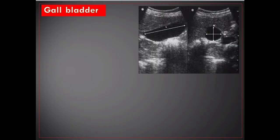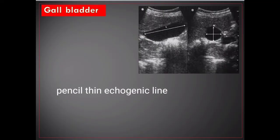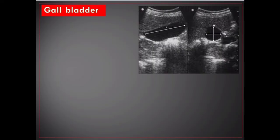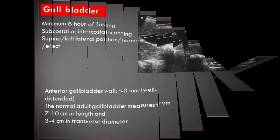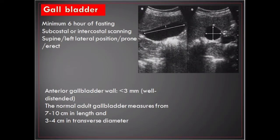Gallbladder sonography is used as the initial imaging technique for evaluating patients with suspected gallbladder disease because of its high sensitivity in the detection of gallbladder stones, its real-time character, speed, and portability. The normal gallbladder wall appears as a pencil-thin echogenic line at sonography. The thickness of the gallbladder wall depends on the degree of gallbladder distension, and pseudo-thickening can occur in the post-prandial state. Anterior gallbladder wall is less than 3 millimeters when well distended.